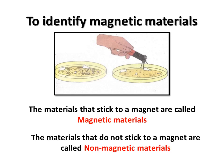Whereas, iron filings and pins get attracted to the magnet and they come out of the mixture in the saucer. That means the materials that stick to a magnet are called magnetic materials. The examples for magnetic materials are iron, cobalt and nickel. While those materials which do not stick to a magnet are called non-magnetic materials.